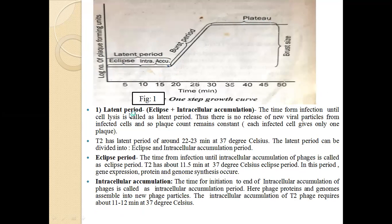The latent period includes two sub-periods: first is eclipse, and second is intracellular accumulation. The time from infection until cell lysis is called the latent period. During this time, there is no release of new virus particles from infected cells, so the plaque count remains constant. T2 phage has a latent period of around 22 to 23 minutes at 37 degrees Celsius.